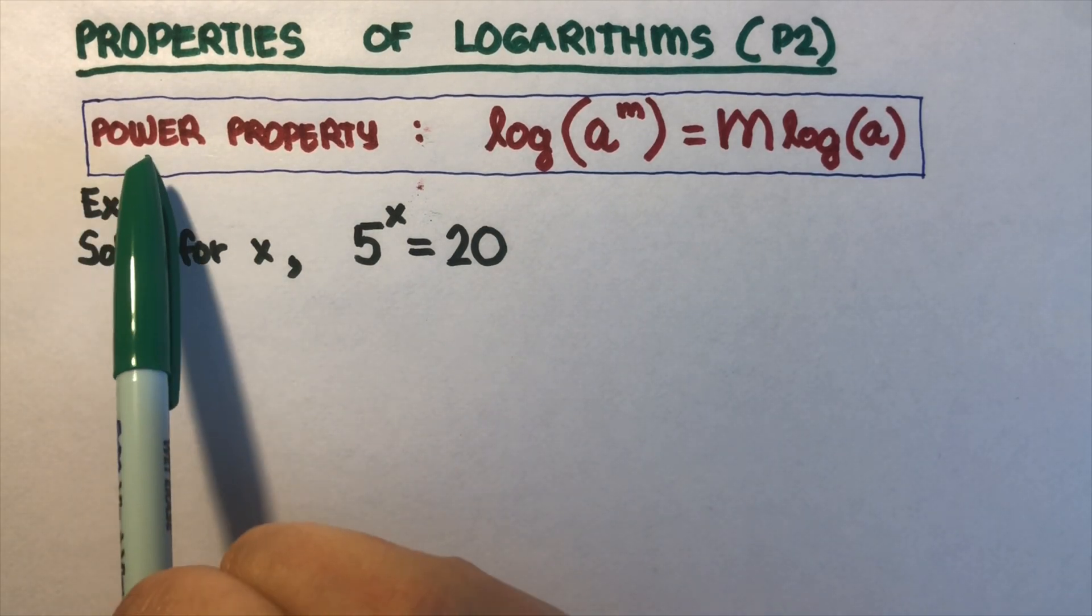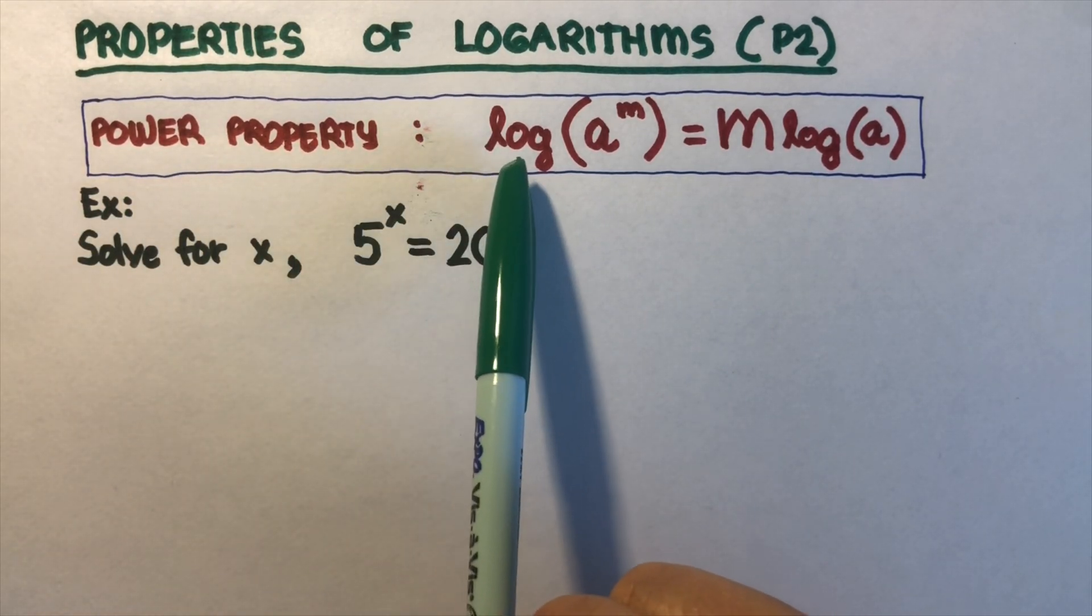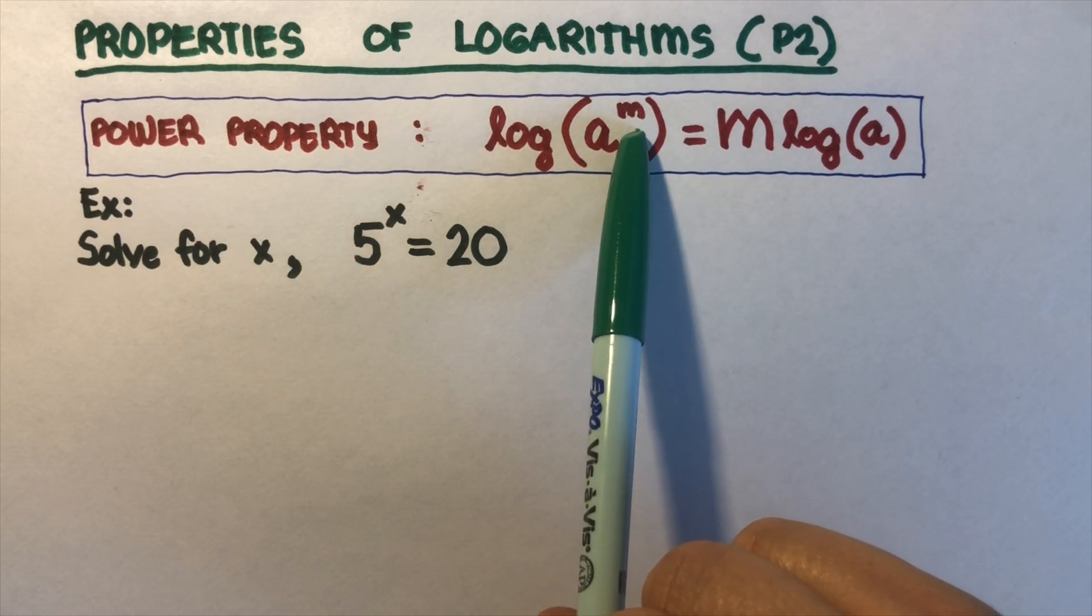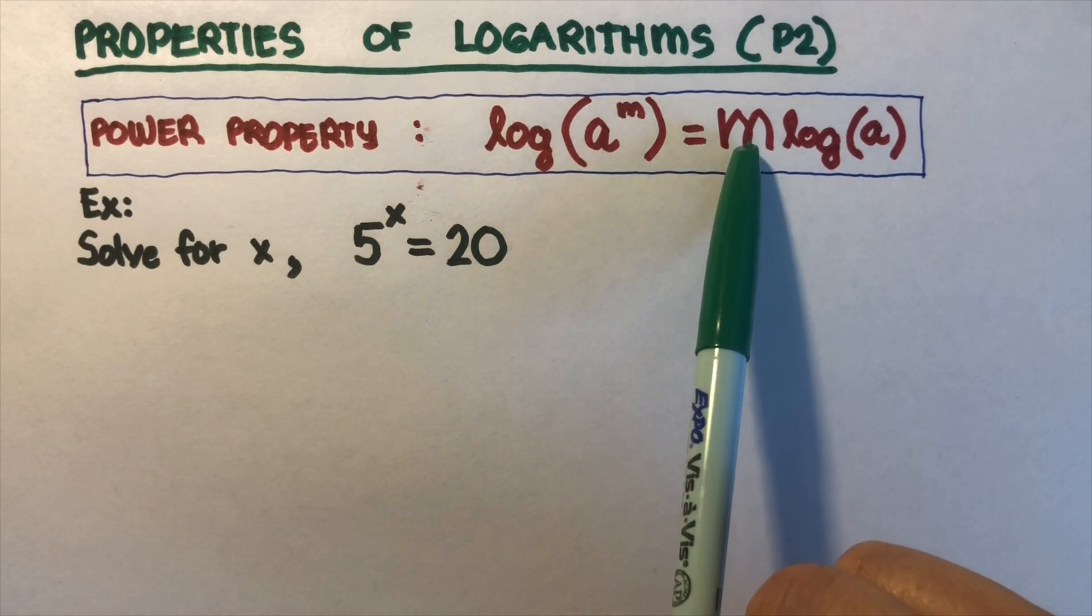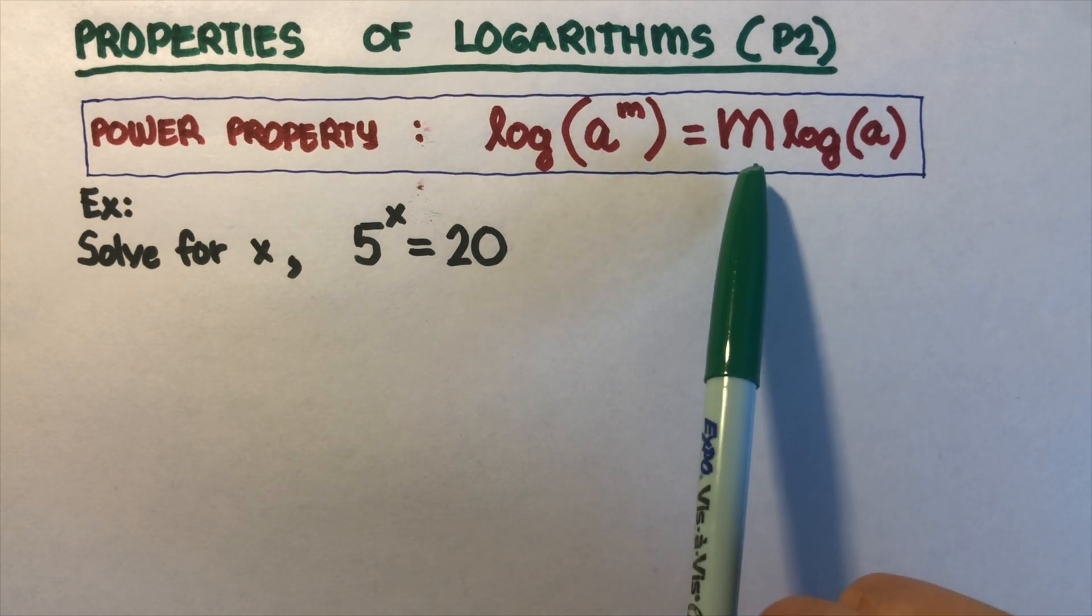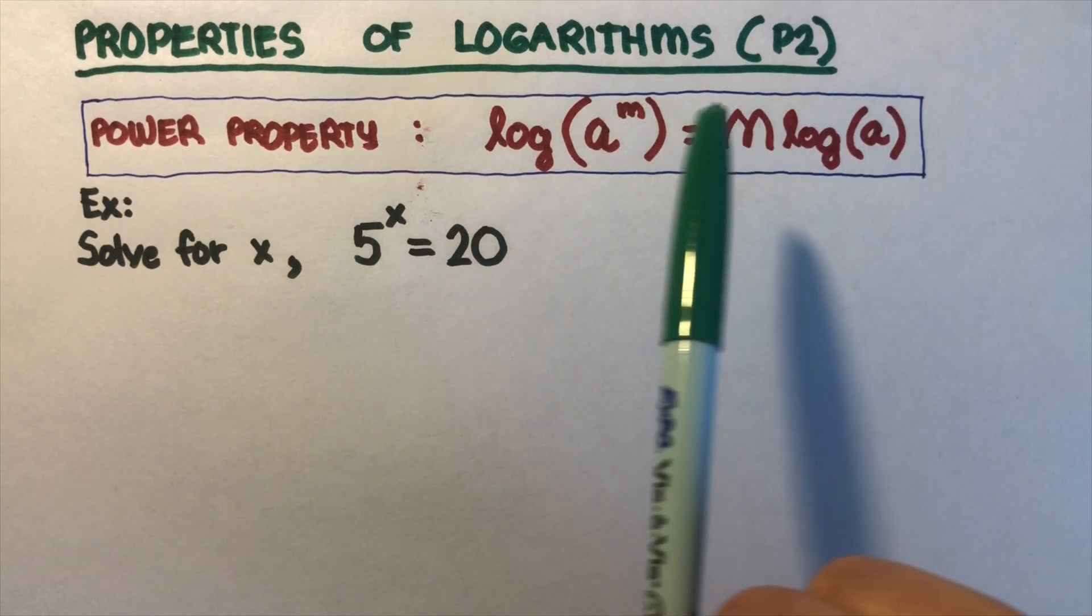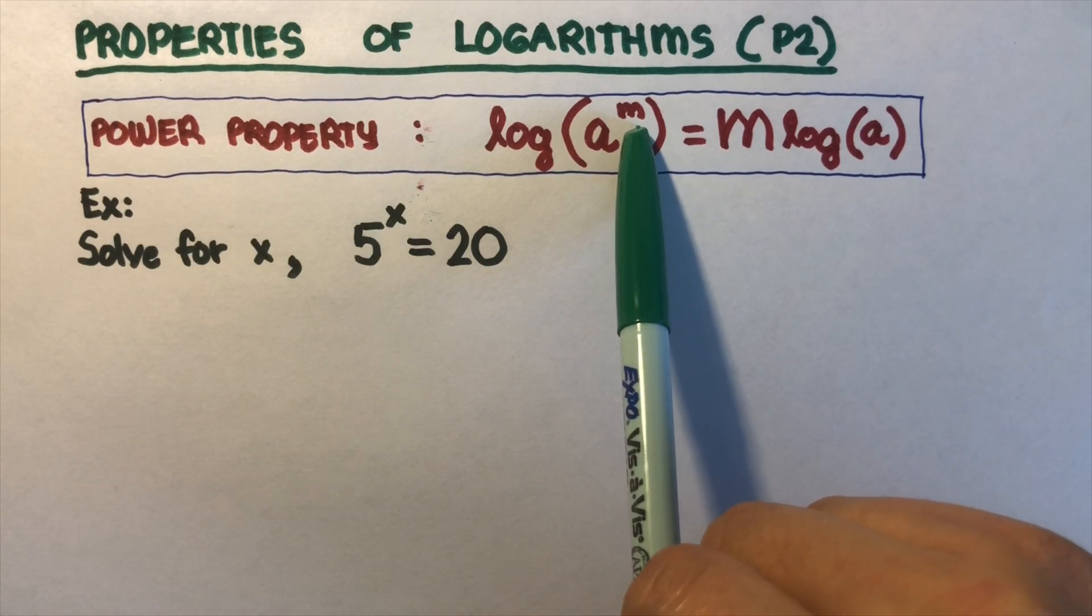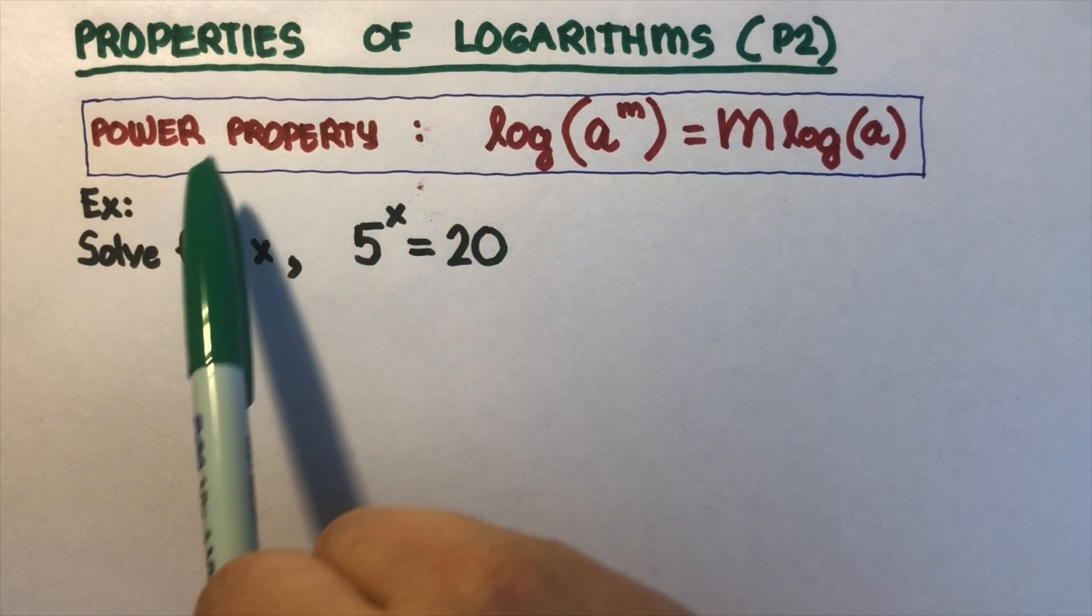So power property has this equation right here. We have log of a to the power m. Whatever the power is, you put it in front of the log. That becomes a coefficient. And so that becomes m log of a. Every time, no matter what, you put it in front. That's the power property.